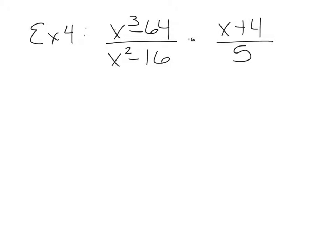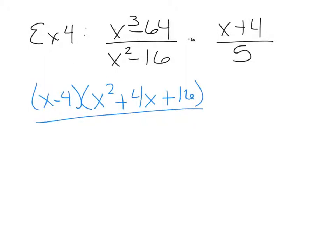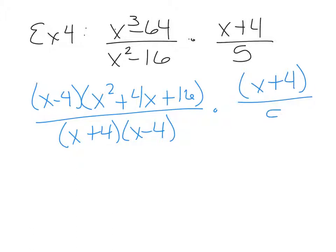Example 4 on page 146: x cubed minus 64 over x squared minus 16, times x plus 4 over 5. Again, a multiply — start by factoring. x cubed minus 64 is the difference of cubes, which factors to x minus 4 times x squared plus 4x plus 16. The denominator x squared minus 16 is the difference of squares, factoring to x plus 4 times x minus 4. The right-side rational expression has both top and bottom as prime — they don't factor at all. Use parentheses around the binomial x plus 4 to remember you can't cancel its terms individually.